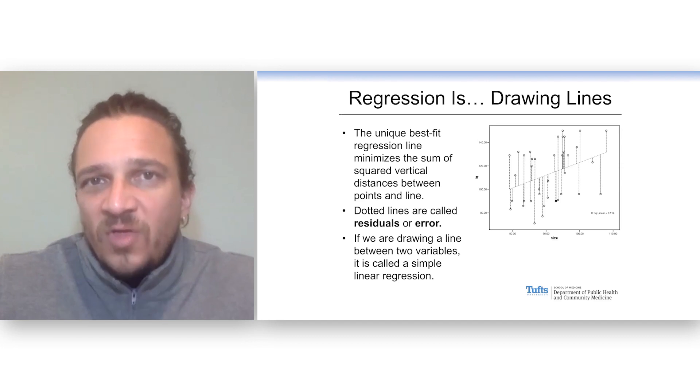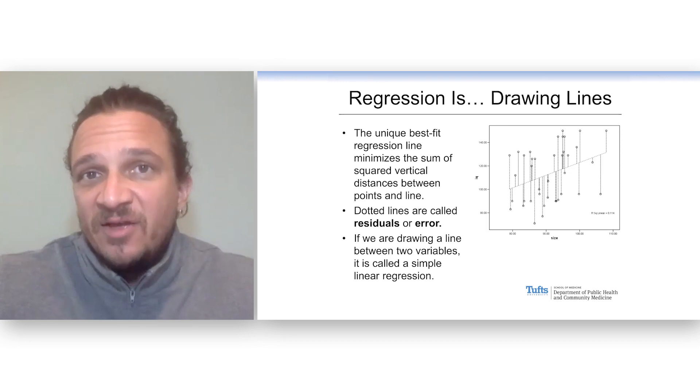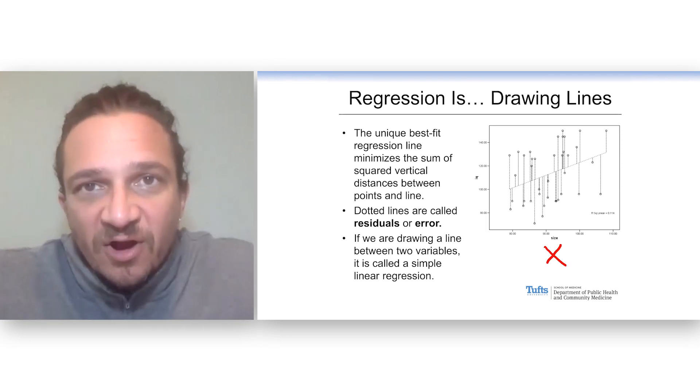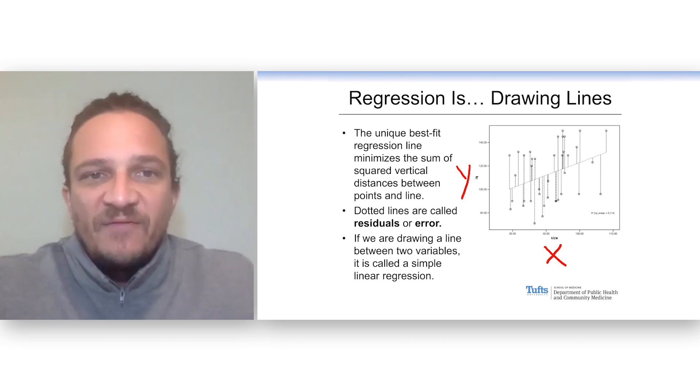This is why the correlation coefficient can tell us if there's a linear association, but it doesn't tell us really the strength with respect to how much does my X variable relate to my change in my Y variable. And regression will do this for us.